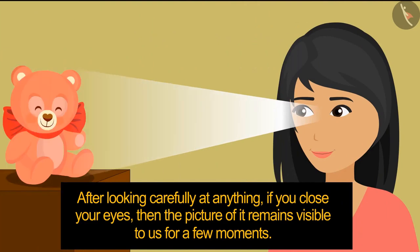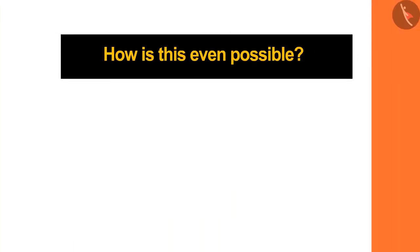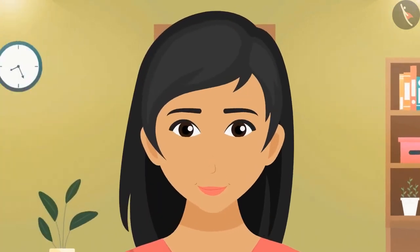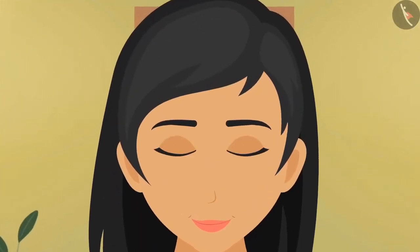All of you must have experienced this: after looking carefully at anything, if you close your eyes, the picture of it remains visible to us for a few moments. But how is this even possible? Have you ever thought of it? The whole game is about our eyes and brain. Today in this video we'll know how the eyes help us to see any object in the world, and we'll also discuss the different parts of the eye.